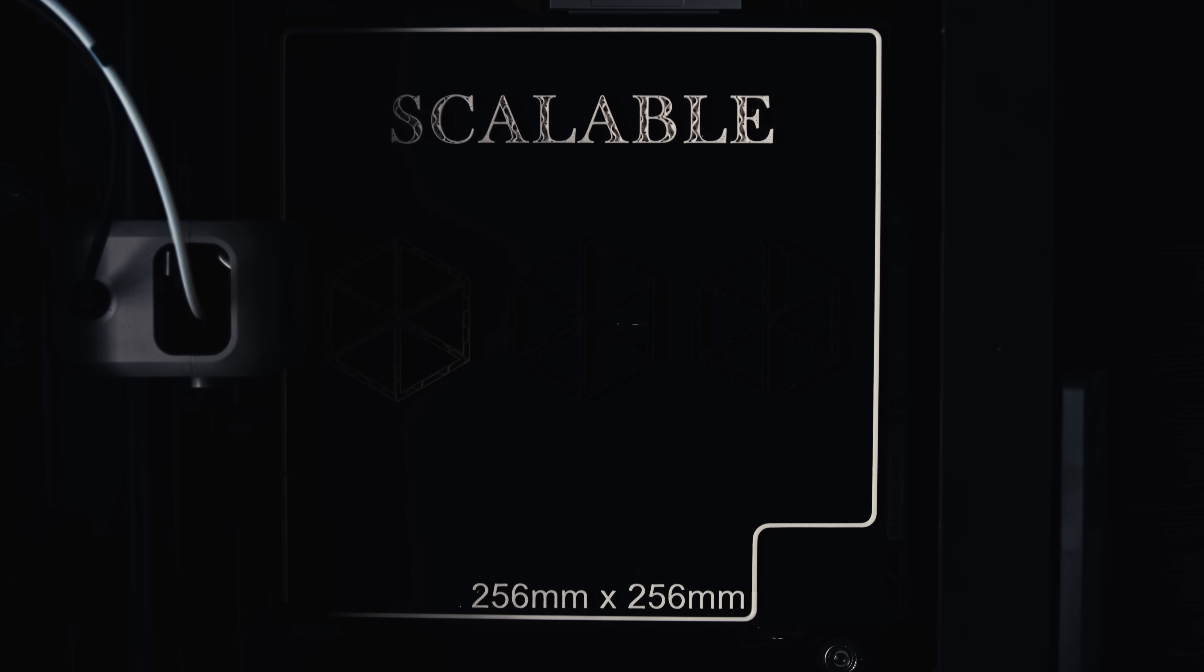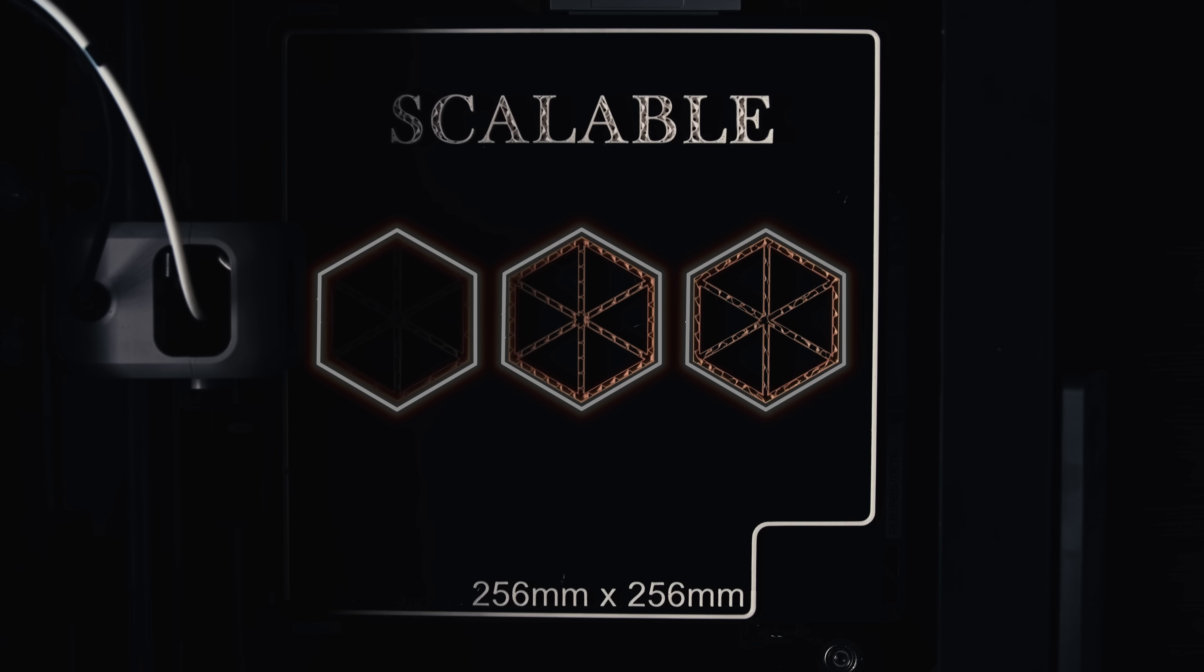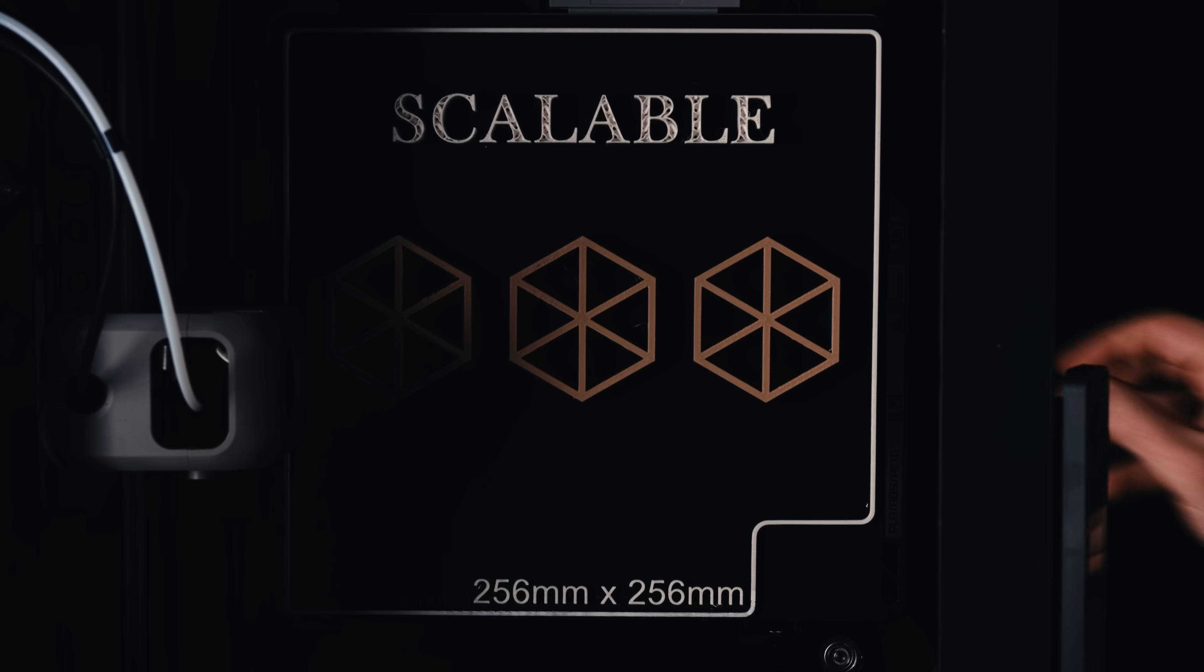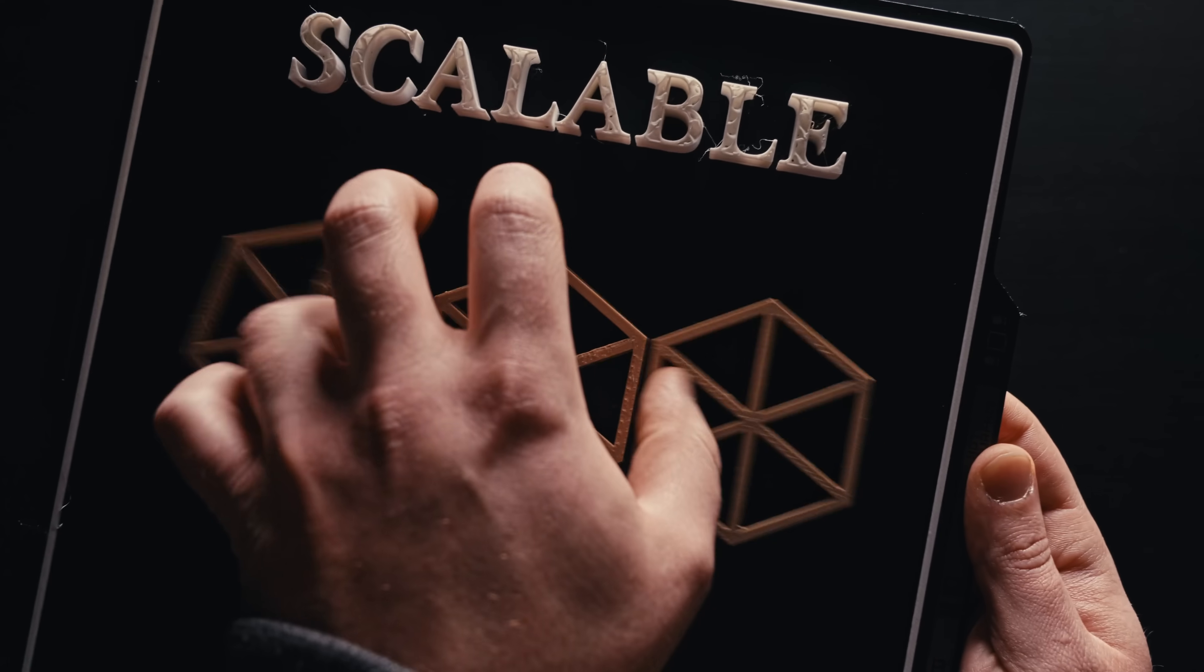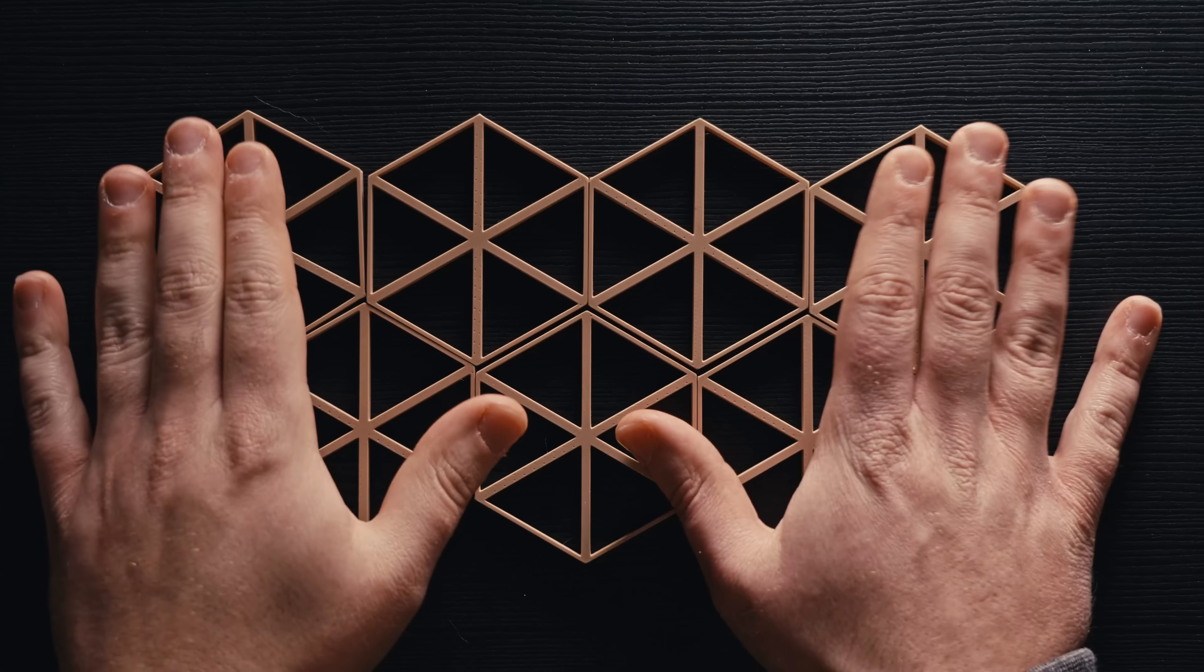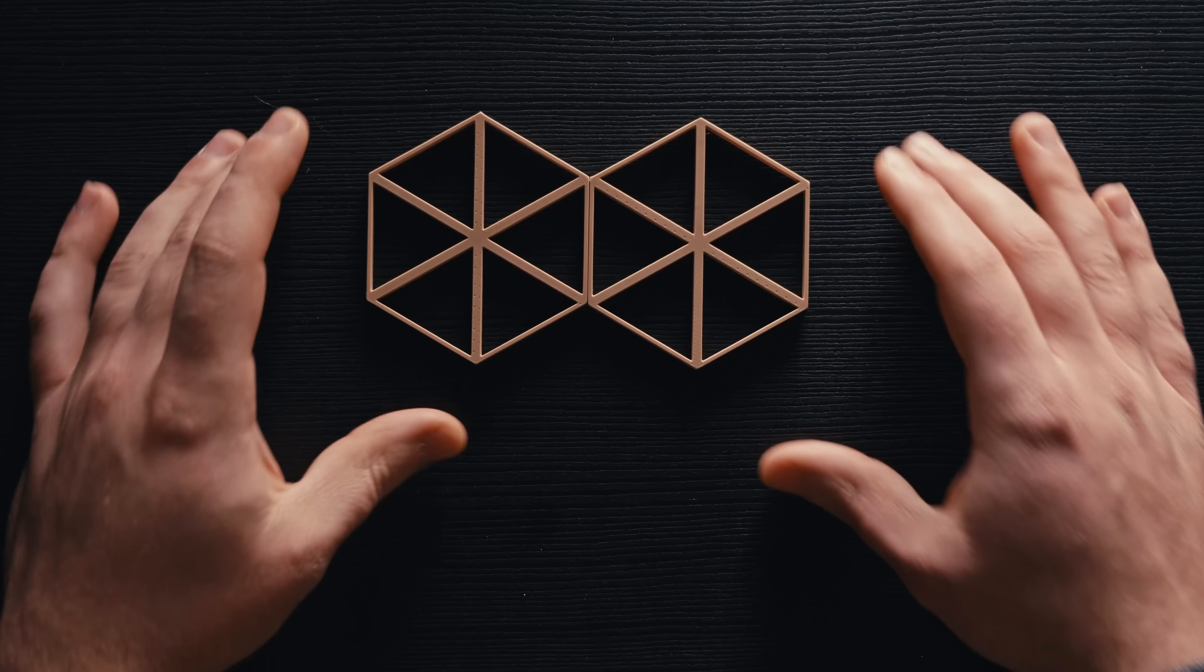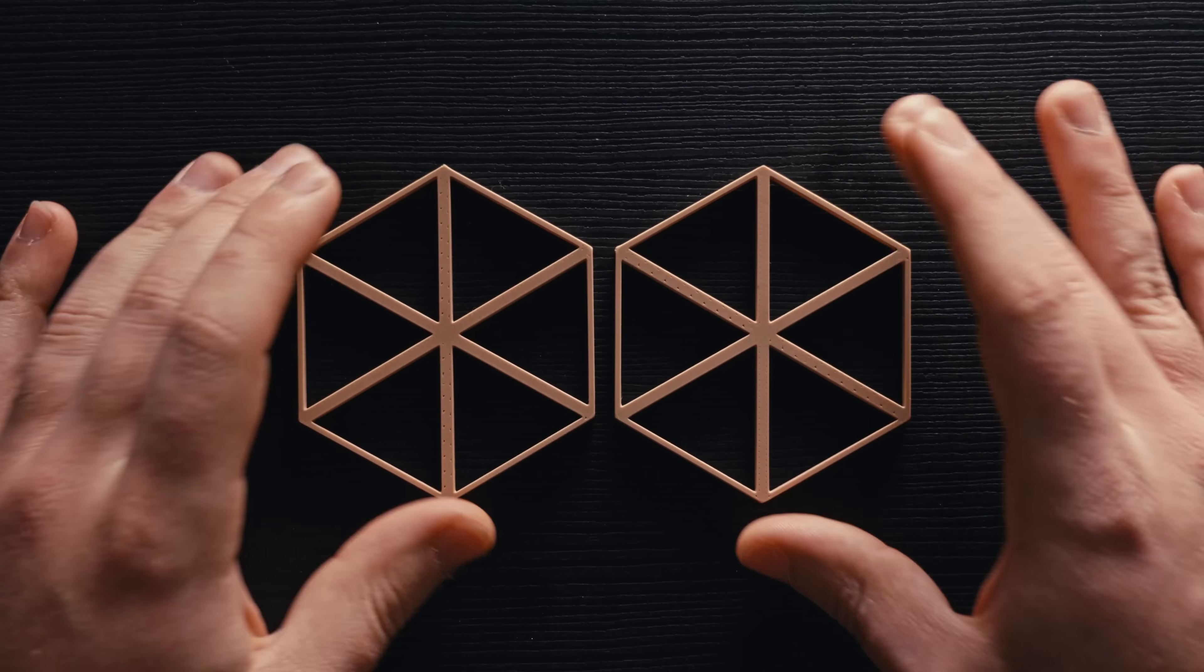My printer is limited to a 25 by 25 centimeter build area, so I needed to figure out how I could take small components and put them together to make a fully scalable triangular grid. I started with simple hexagons, and while they do pattern well for this situation, there's not a lot of area available to create strong connections between them.